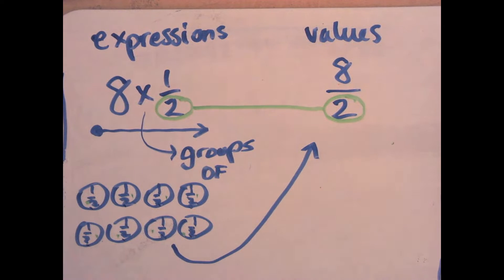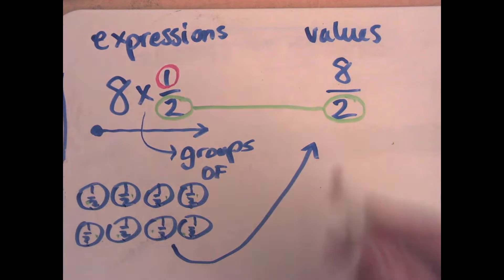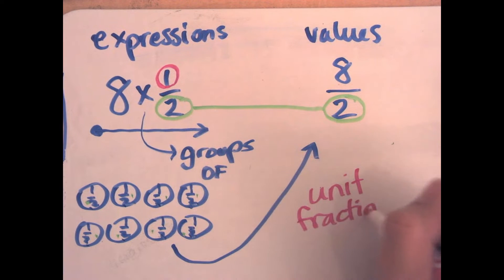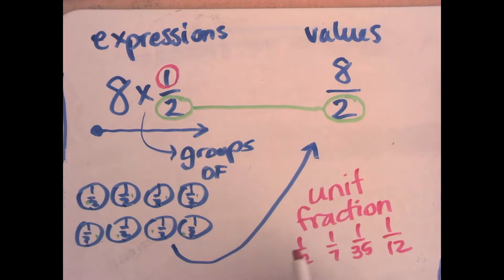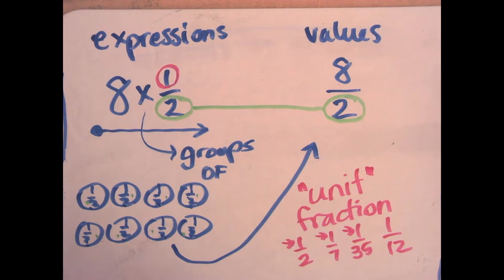We also observe that when we're multiplying, the expression is always going to have a unit fraction. A unit fraction always has a numerator of one — so one half, one seventh, one thirty-fifth, one twelfth. That is the kicker. This is called a unit fraction. The unit fraction tells you how big the piece is.